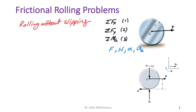Assuming rolling without slipping, we get a_G equals α·r as the fourth relation.